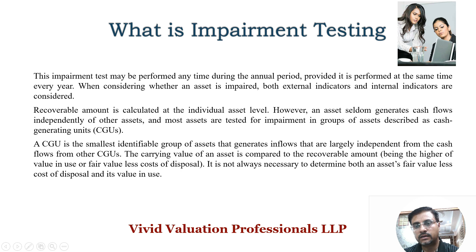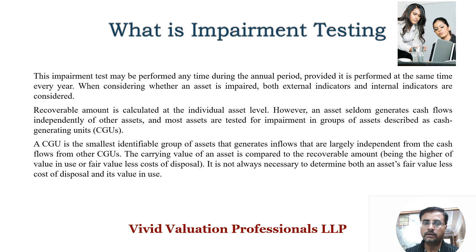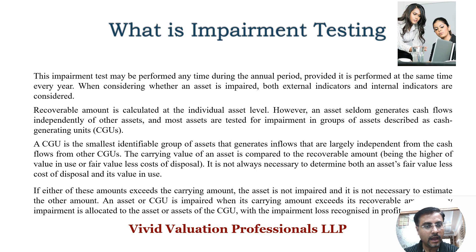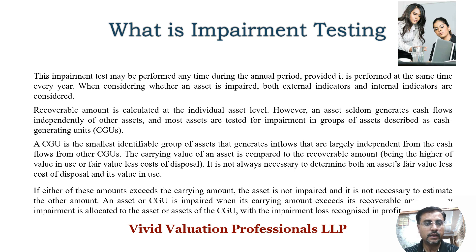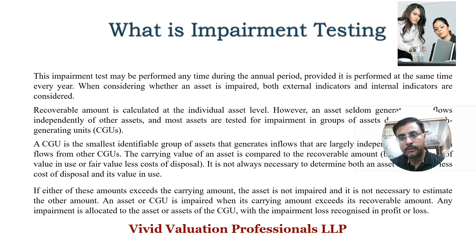It is not always necessary to determine both the fair value less cost of disposal and value in use. You can apply the discounted cash flow (DCF) method to arrive at the value in use. If either of these amounts exceeds the carrying amount, the asset is not impaired and it is not necessary to estimate the other amount. An asset or CGU is impaired when its carrying amount exceeds its recoverable amount, and any impairment loss is allocated to the assets of the CGU.